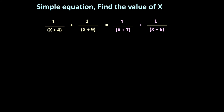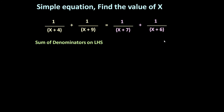Here the given problem is: find the value of x. If 1 upon x plus 4, plus 1 upon x plus 9, is equal to 1 upon x plus 7, plus 1 upon x plus 6. This is the equation and from this we have to find out the value of x. Using Vedic Mathematics, we can solve it in minimum steps.